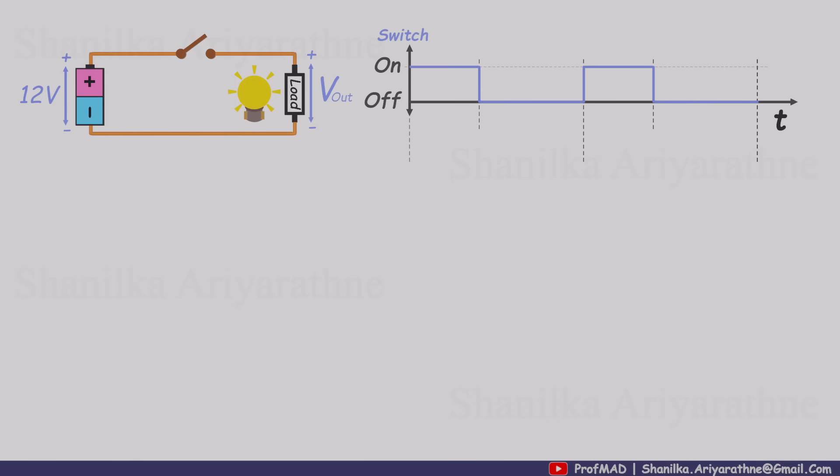The switch stays on for a certain amount of time, then off for a certain amount of time. One complete on-off cycle is called the switching period, and the fraction of that period when the switch is on is called the duty cycle.